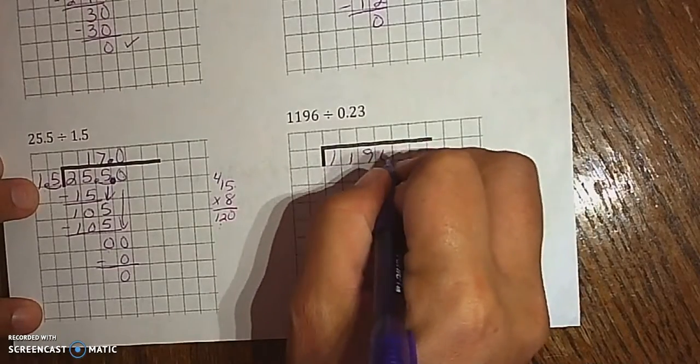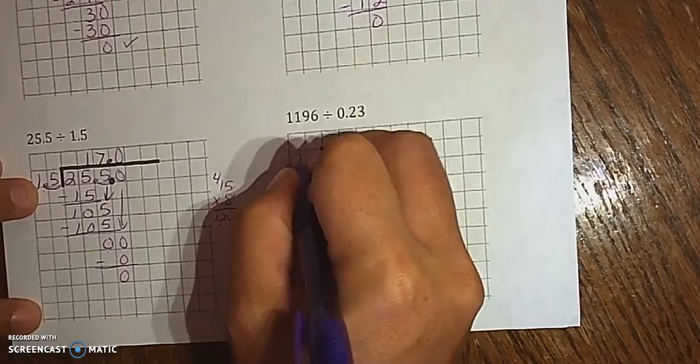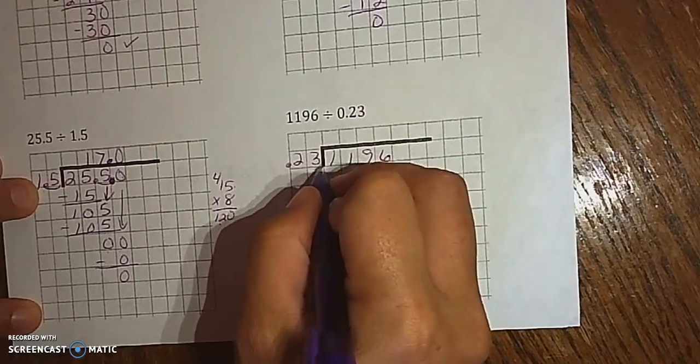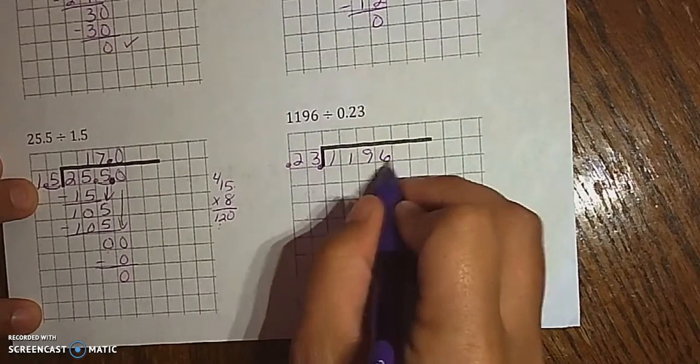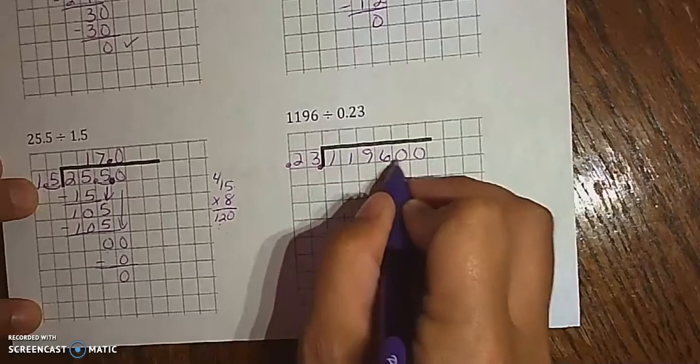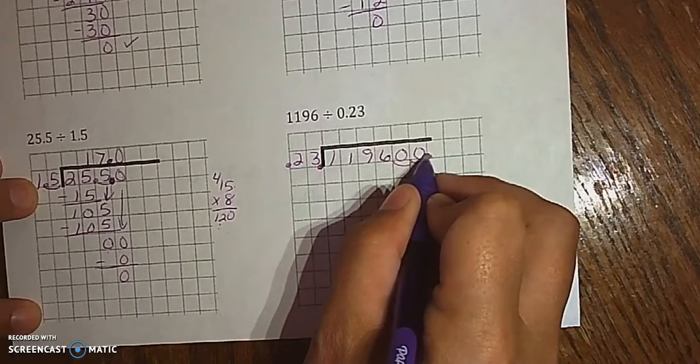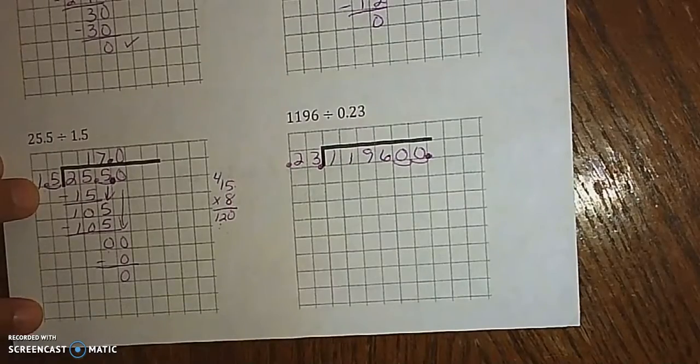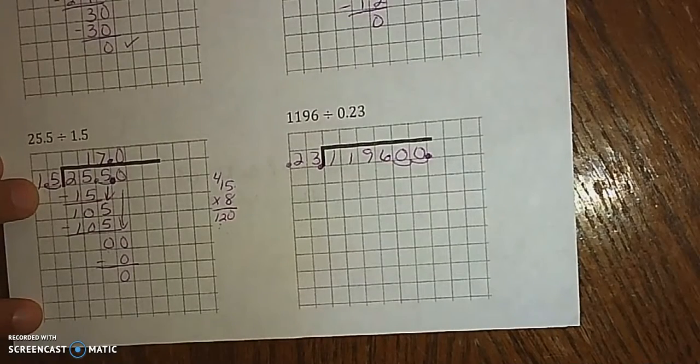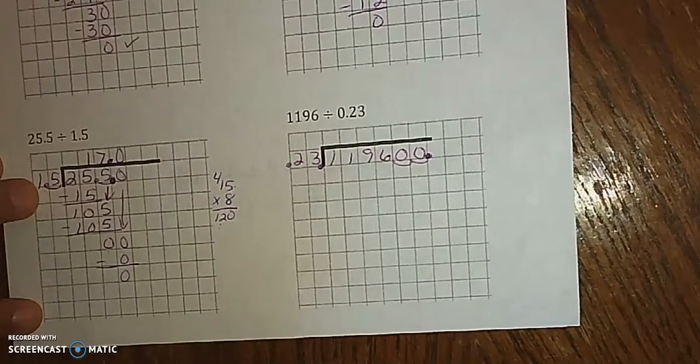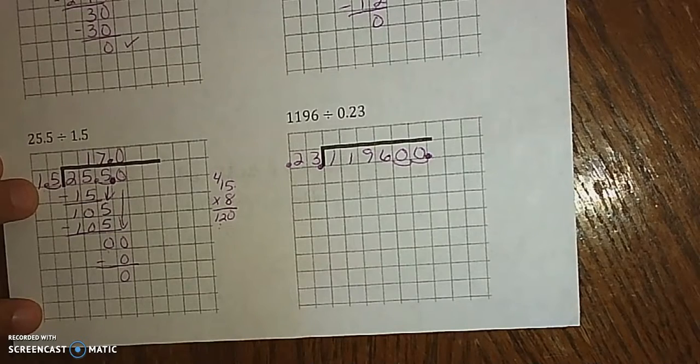11.96 goes in the house. 0.23 goes outside. That decimal goes over twice, which means this decimal has to go over twice, which means we're adding 0s. So instead of 0.23 into 1,196, it's now 23 into 119,600.